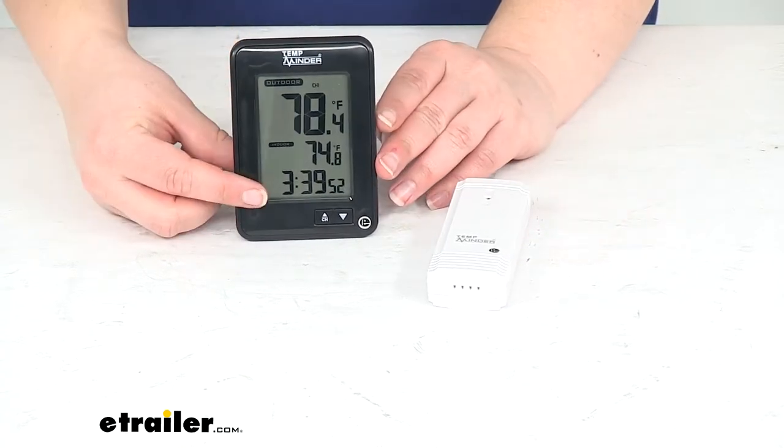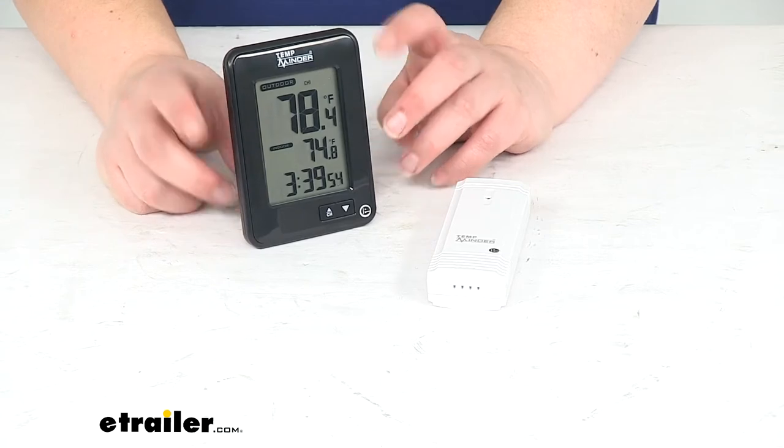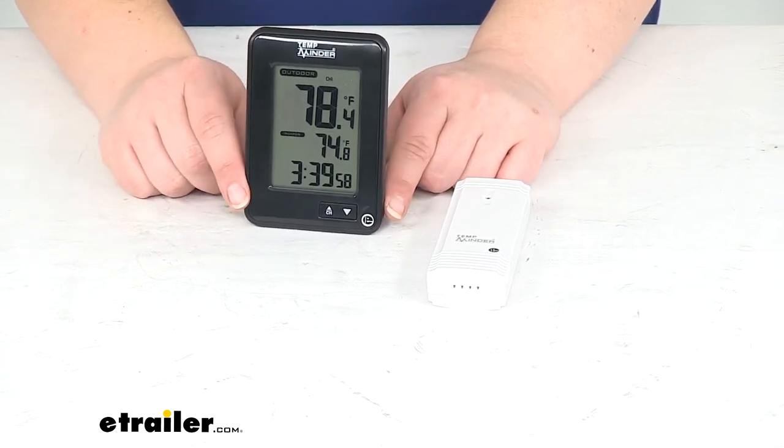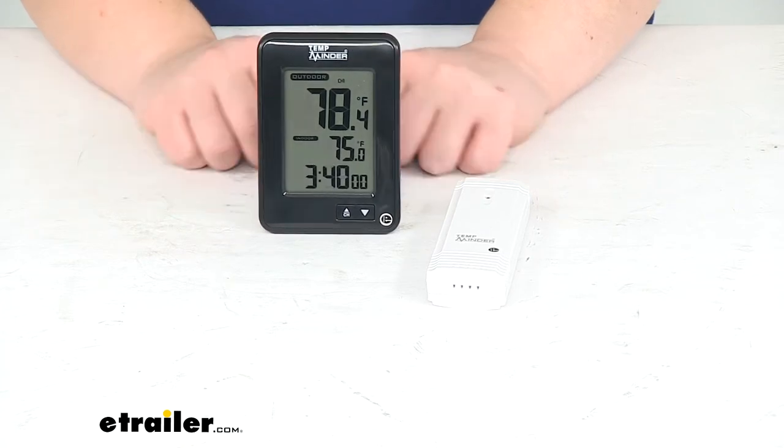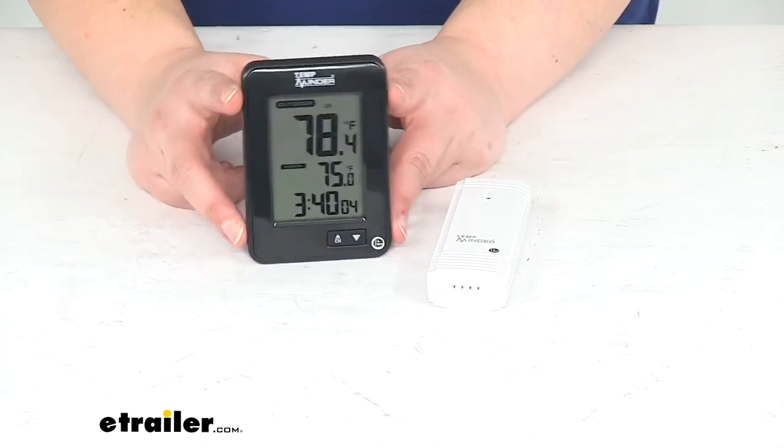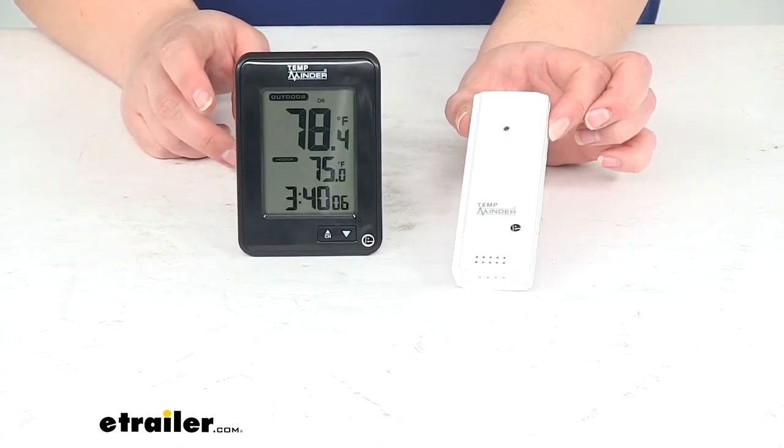This also has a clock so you can keep track of time as well as the temperature inside and outside your RV, or really anywhere you'd want to have these two pieces. We have our monitor, which is this piece here, and then our remote.